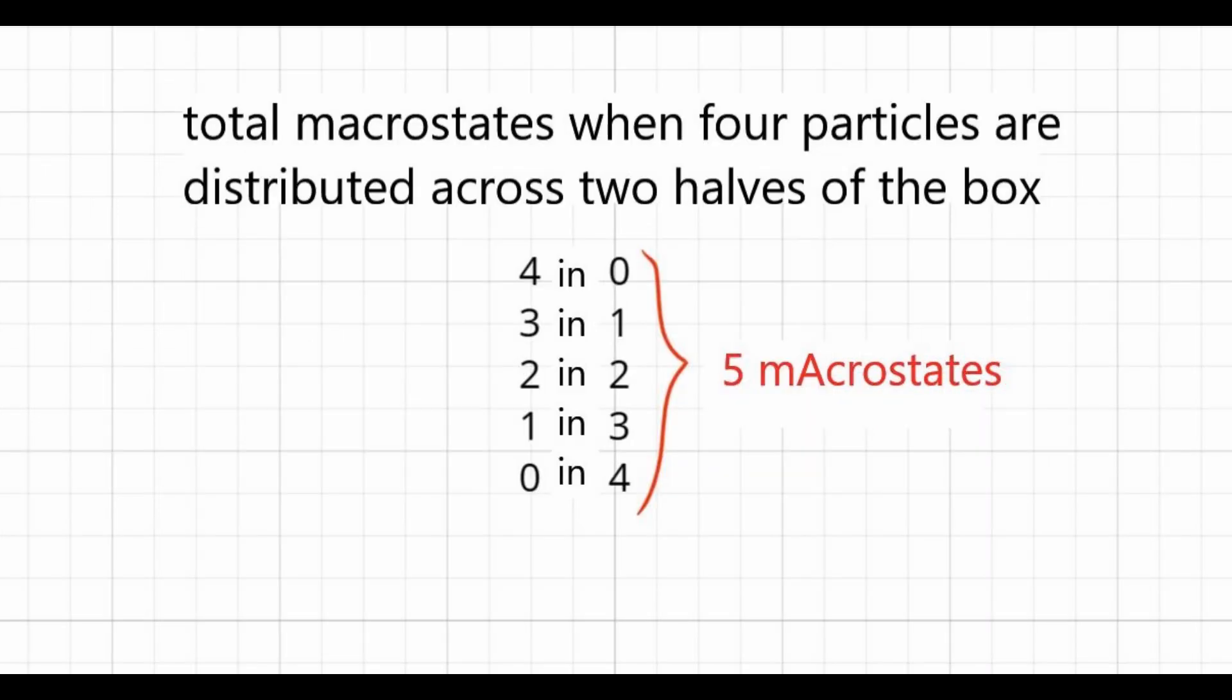Thus, there are five possible macrostates when distributing four particles between the two halves of a box: four in zero, three in one, two in two, one in three, and zero in four.